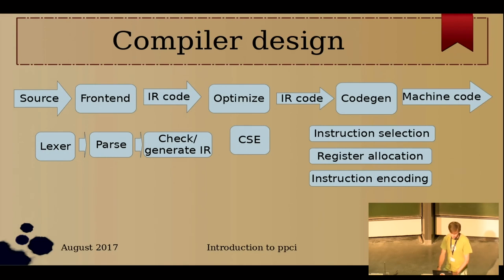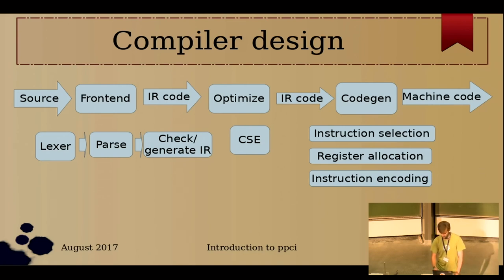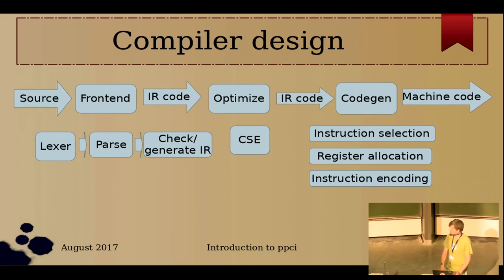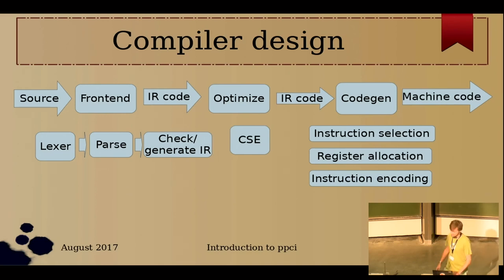To go from IR code to machine code, there are algorithms involved to select the proper machine code instructions and to determine which register should be used at which point. For the optimization part, intermediate code goes in, gets optimized, and hopefully a better intermediate representation comes out. There's no golden bullet here — you just try lots of different algorithms. One example is CSE, common subexpression elimination.